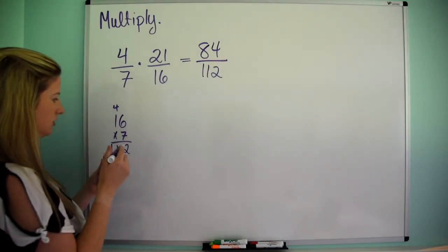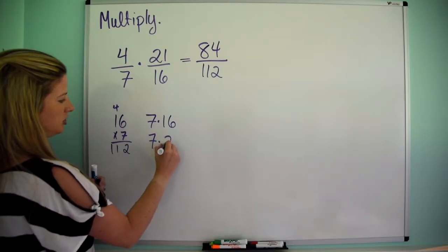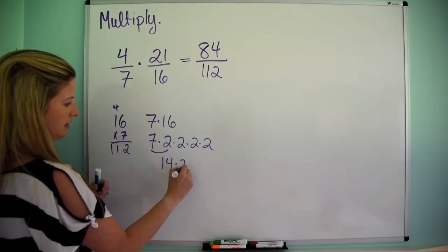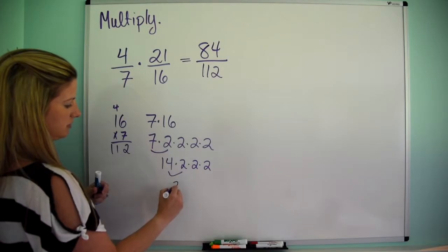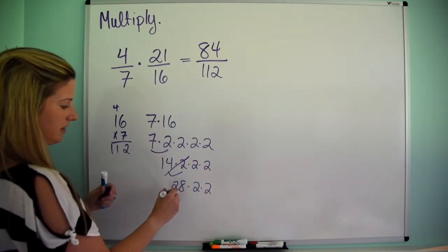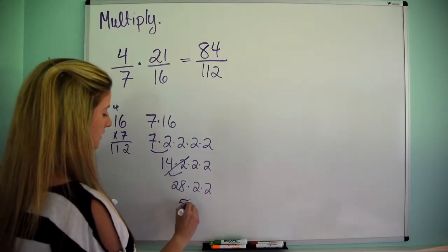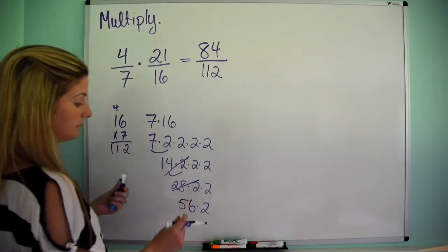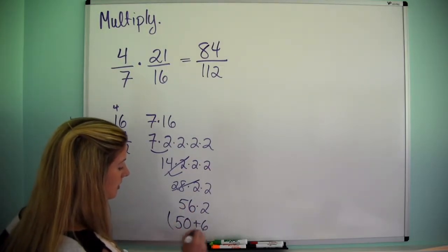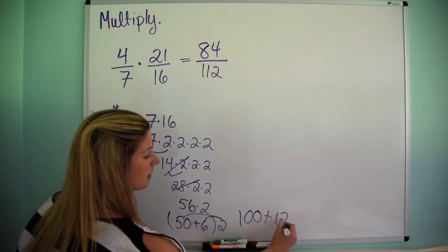Just so you know, I'm a big fan of the doubling method. So 7 times 16 is the same as 7 times 2 times 2 times 2 times 2 times 2, because that's another way to write 16. So 7 times 2 is 14. Then we've got three twos left. 14 times 2 is 28. Then times 2: 28 times 2 — think of 30 times 2 is 60, minus 4, so 56. Then 56 doubled: 50 doubled is 100 plus 6 doubled is 12. So that's 112.